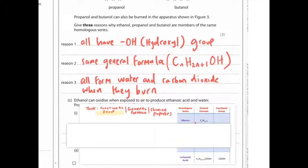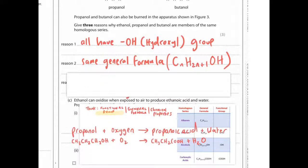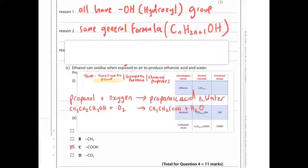They gave you alcohols this time. Next time it might be carboxylic acids. So just prepare an answer mentally for what that might be.